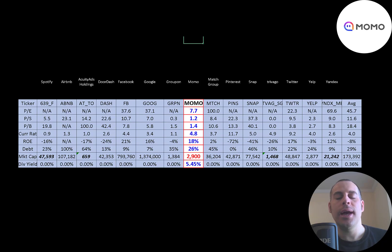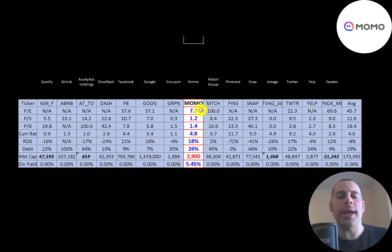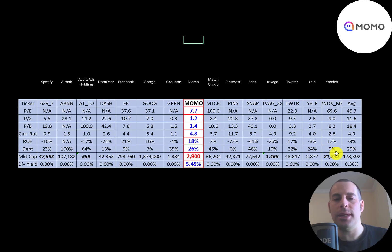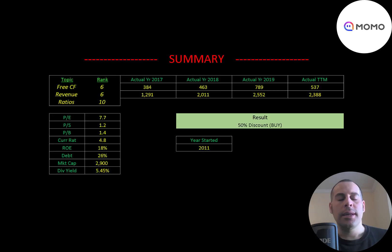The best way to look at ratios is to compare them to companies in the same industry. I've done videos on 14 companies in the same industry as Momo. If Momo has a number in blue, they're better than the average; if red, they're worse. They're better in everything and have really good ratios, though they do have a much lower market cap than average because their stock price has come down so much, and the average is high due to big companies like Google and Facebook.